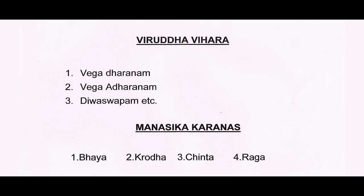Coming to Viritha Hara — Vega Dharanam, Vega Adharanam, Divas Vapunam — these three are very important causative factors for Kusta. Coming to Manasaka Vikaras — Bhaya, Krodha, Chinta, Raga — these are very important. When once you come across the quotation by Asangharutaya, the very first sloka itself says Raga Adhi Rogan — Raga itself is a roga. This is a very good observation by Vagvathakara.